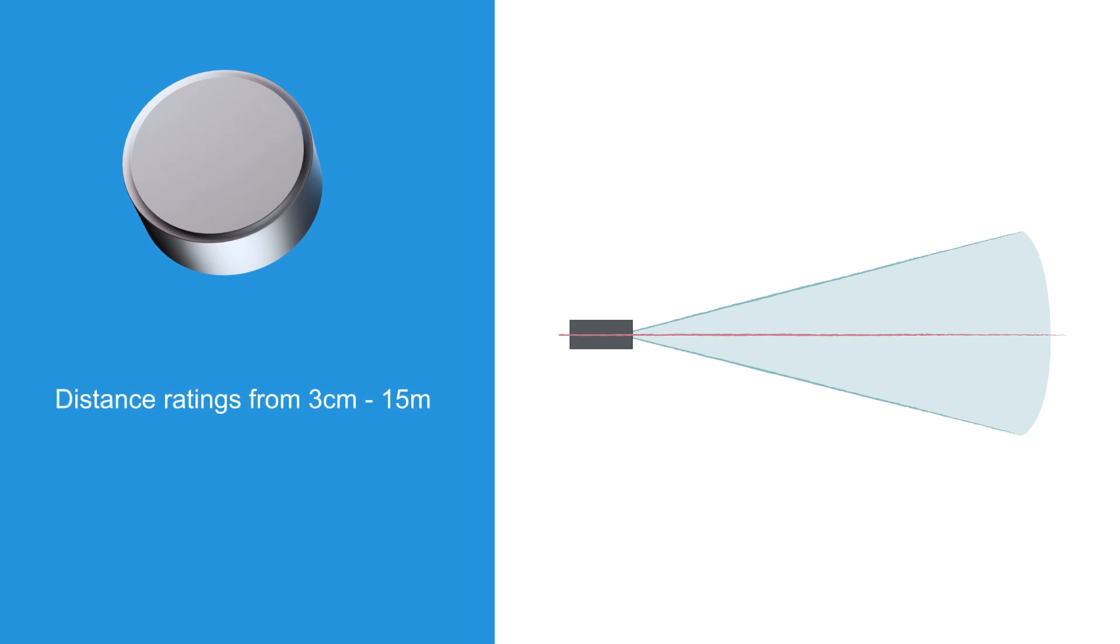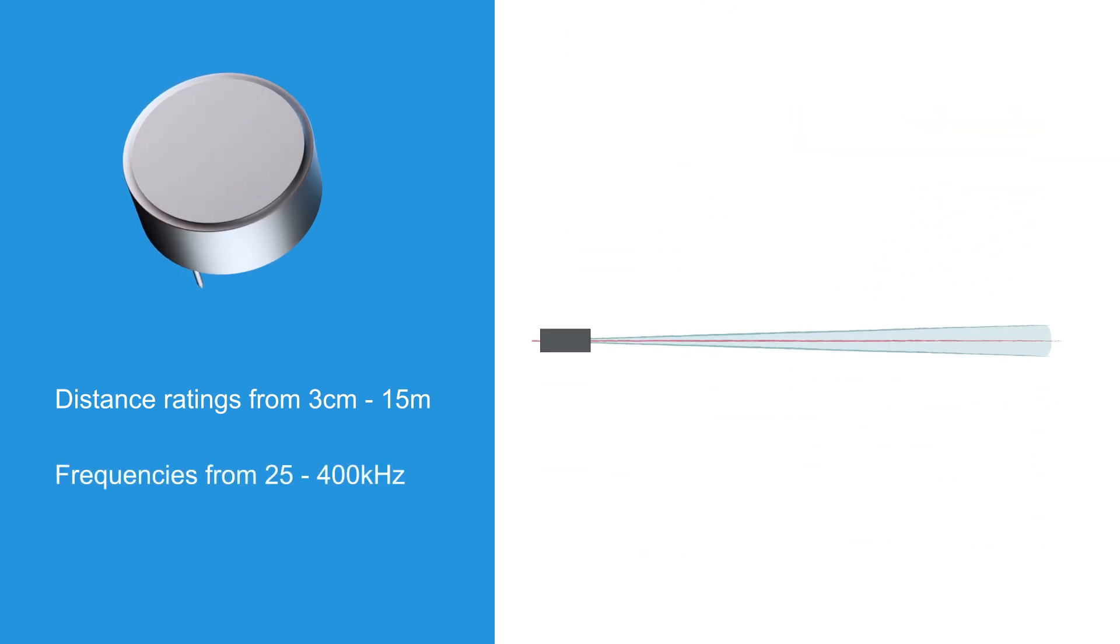SameSky's IP-rated ultrasonic sensors include options with distance ratings from 3 centimeters to 15 meters, covered by frequencies from 25 to 400 kilohertz, and beam angles from 7 degrees to 80 degrees, providing solutions for spot and general area detection.